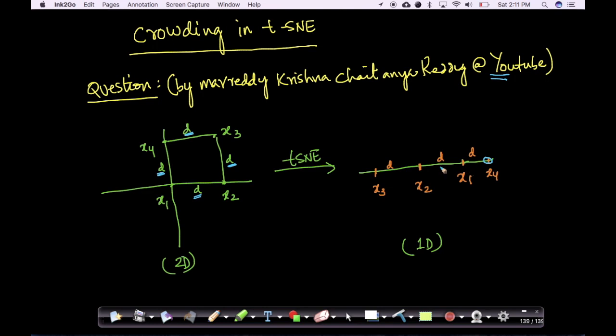So, what is happening here, if you notice, is the question that Chaitanya asked is, why are we putting x4 here? Why cannot we put x4 on top of x2?